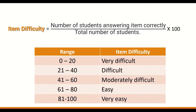The table below classifies questions according to their item difficulty value. A range of 0 to 20% is considered a very difficult question. A range of 21 to 40% is difficult. A range of 41 to 60% is moderately difficult. A range of 61 to 80% is easy, and any question with a p-value greater than 81% is considered very easy. These are the criteria to classify questions based on item difficulty.